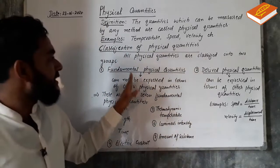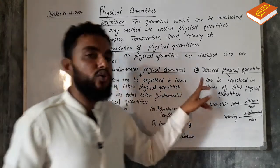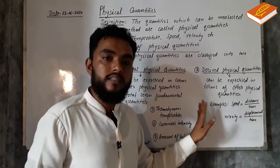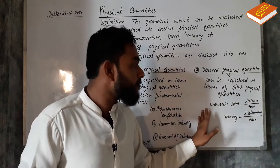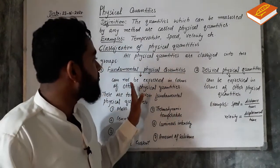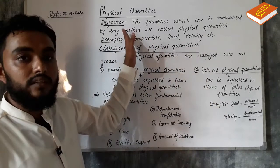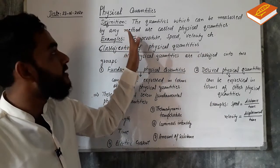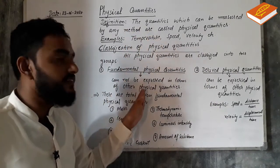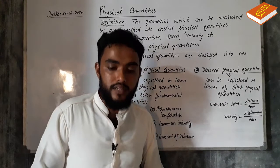If you read all of this, this is fundamental. The number of fundamental quantities is fixed. This is the fundamental classification of physical quantities. There are two major groups: fundamental physical quantities and derived physical quantities.